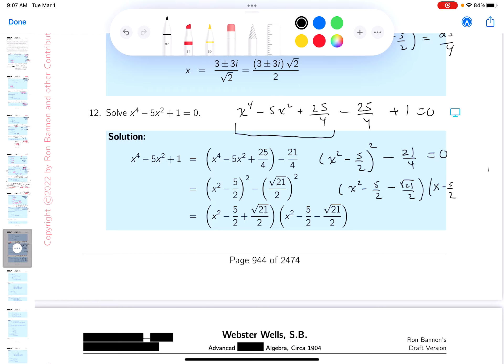Minus 5 halves plus root 21. This is square. Sorry about that. Over 2 equals 0. And, you know, I think I can do something now, and I'll tell you what I can do. I can say x squared is equal to 5 plus root 21 over 2.